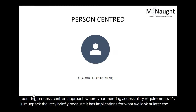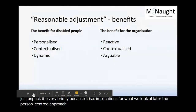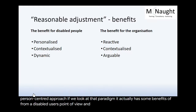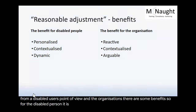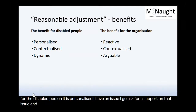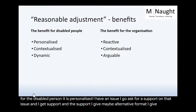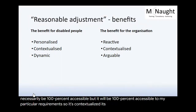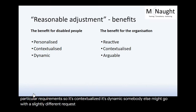Alongside that in parallel, you have legislation that is requiring a process-centred approach, where you're meeting accessibility requirements. The person-centred approach actually has some benefits. From a disabled user's point of view and the organisation's, there are some benefits. For the disabled person, it is personalised. I have an issue, I go and ask for support on that issue and I get support. The support I give, maybe the alternative format I give, won't necessarily be 100% accessible, but it will be 100% accessible to my particular requirement. So it's contextualised, it's dynamic. Somebody else might go with a slightly different request for inaccessible content and they get a different solution.